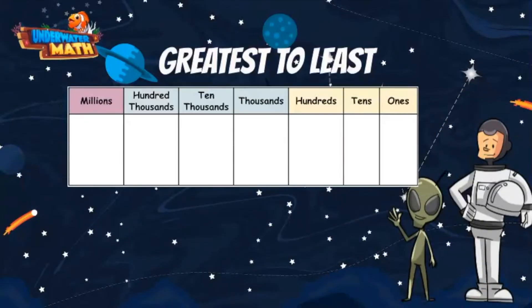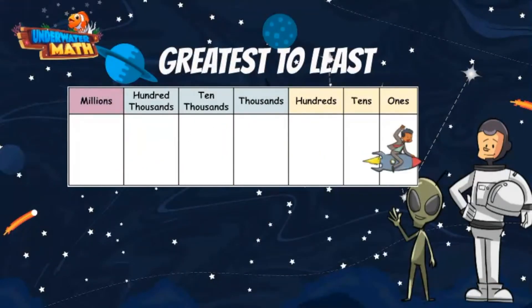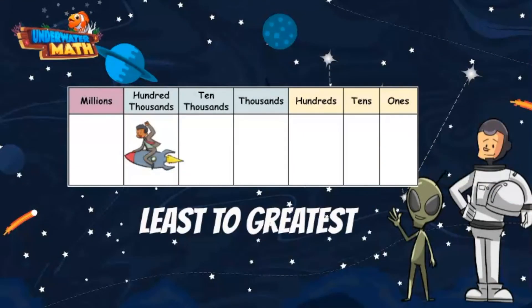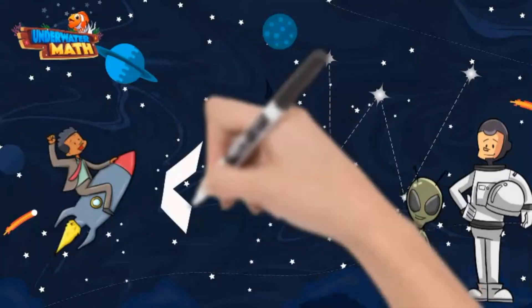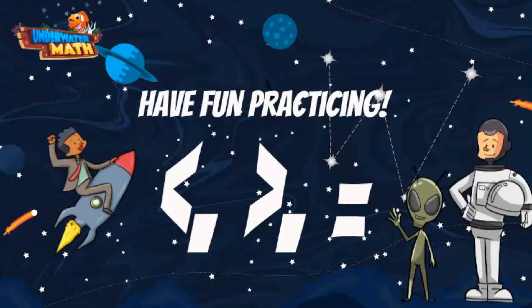To recap what we have learned, we can order numbers from greatest to least or least to greatest. We can compare numbers using the greater than, less than, or equal to symbols. We need to pay attention to what the question is asking us to do before we start ordering numbers. Great job and have fun practicing.